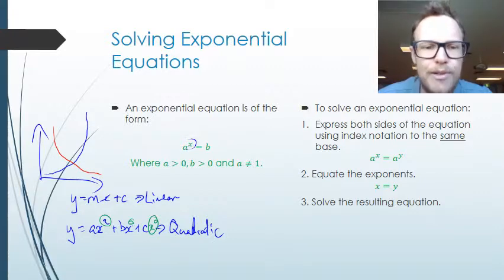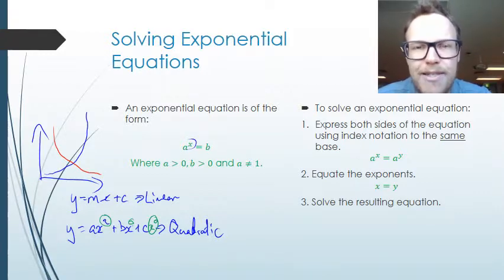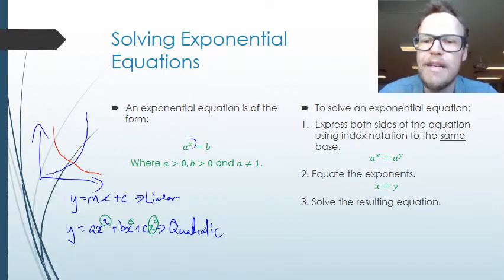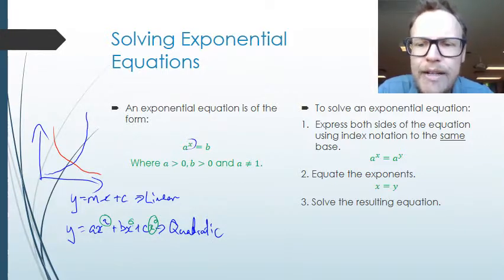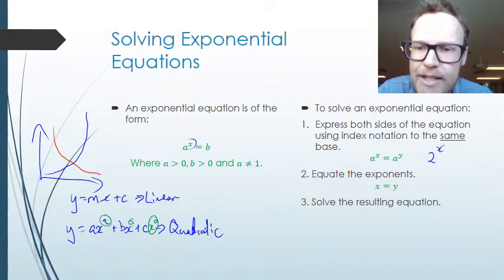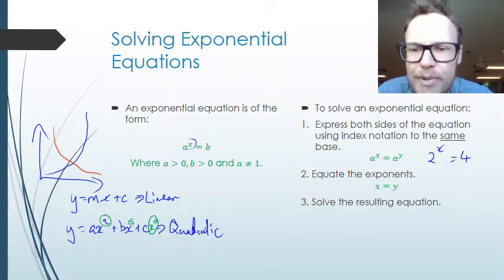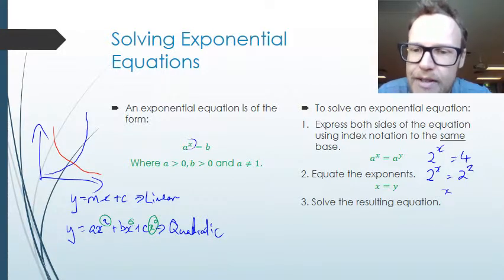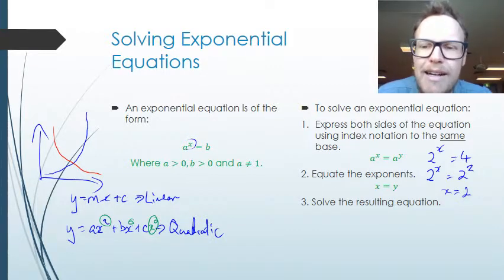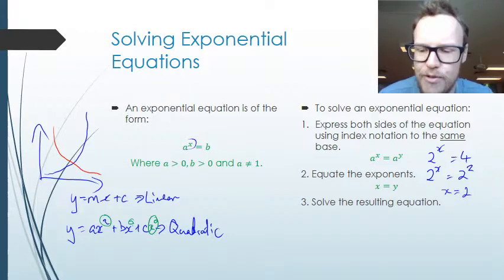To solve an exponential equation, we express both sides of the equation using index notation to the same base. If we have the same base, we can then compare the exponents. For example, if I had 2 to the power of x equals 4, I can express this as 2 to the power of x equals 2 squared, because 4 is 2 squared. Then the next step is to equate the exponents, giving x equals 2. If there's anything more complicated, I can then solve that resulting equation.